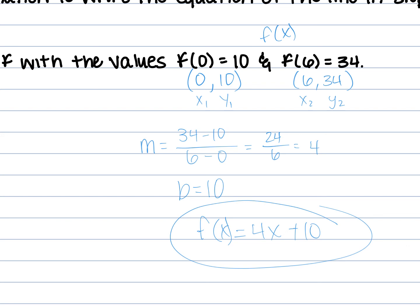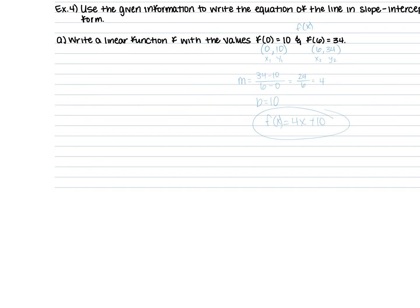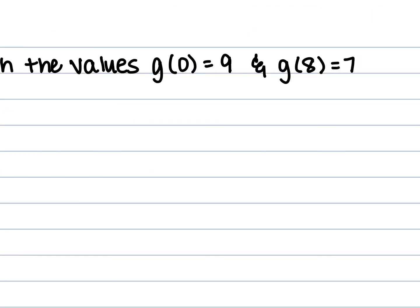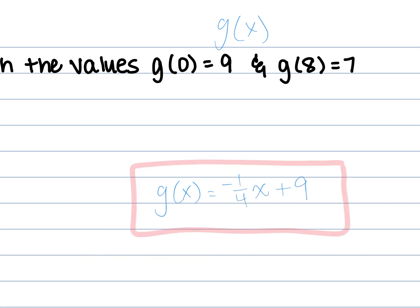Any questions? The process is the same when it's written in function notation — you still need slope and y-intercept. Your final answer just needs to be written as f of x equals. Try the next one on your own. Is this one f of x? No — it's g of x. Put it at the top so you don't forget: g of x. Make your points, find your slope, find your y-intercept, and you're good. Answers are on the board — check what you did and talk to each other.